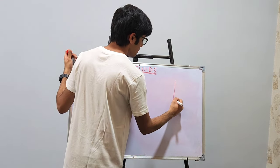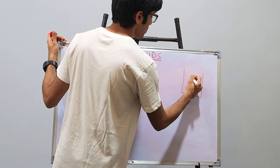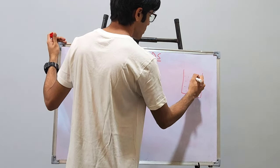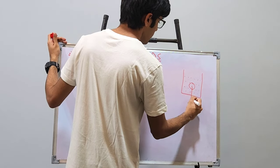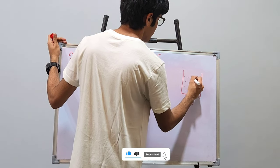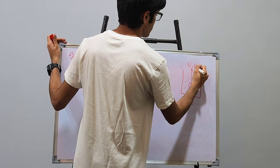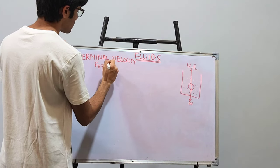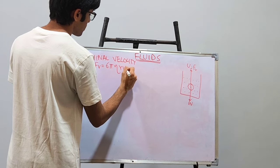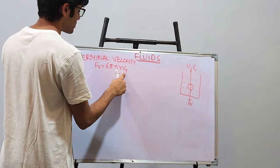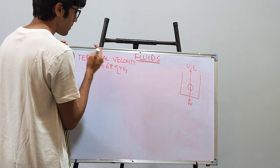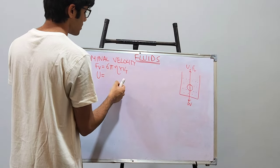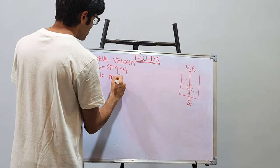Let's say this is a cylinder filled with a viscous fluid. This is a body which is falling through this viscous fluid. The weight of the body will act downwards, while there will be an upthrust force and a viscous force. The viscous force is 6π η R Vt, where Vt is the terminal velocity and η is the coefficient of viscosity. The upthrust force is the weight of the liquid displaced, which is Mg — the mass of the liquid.